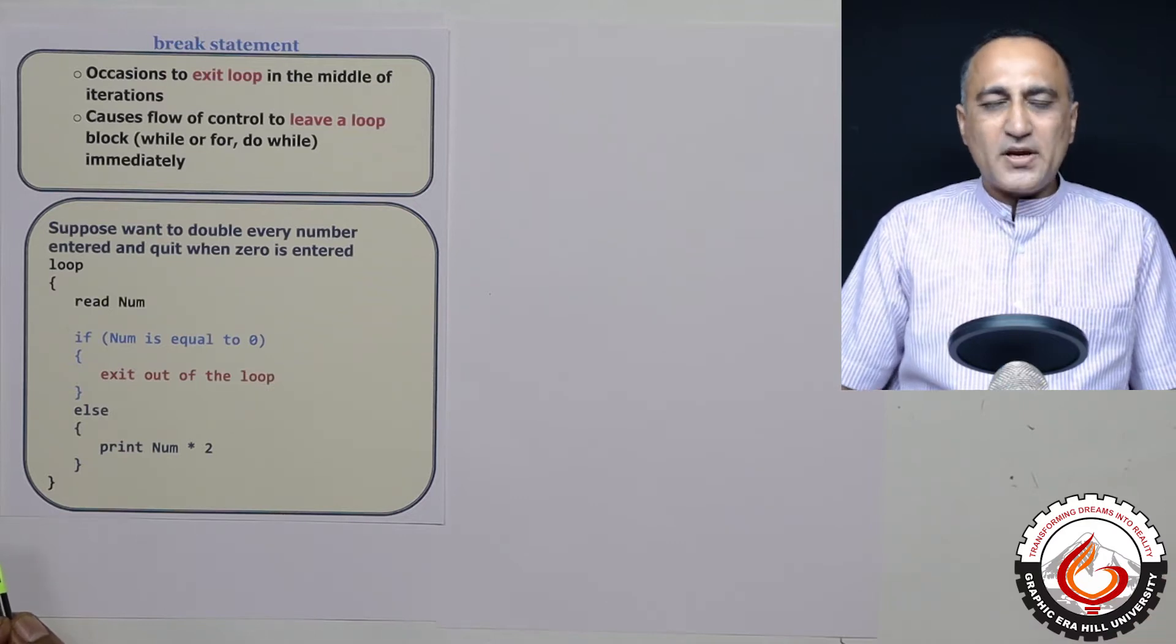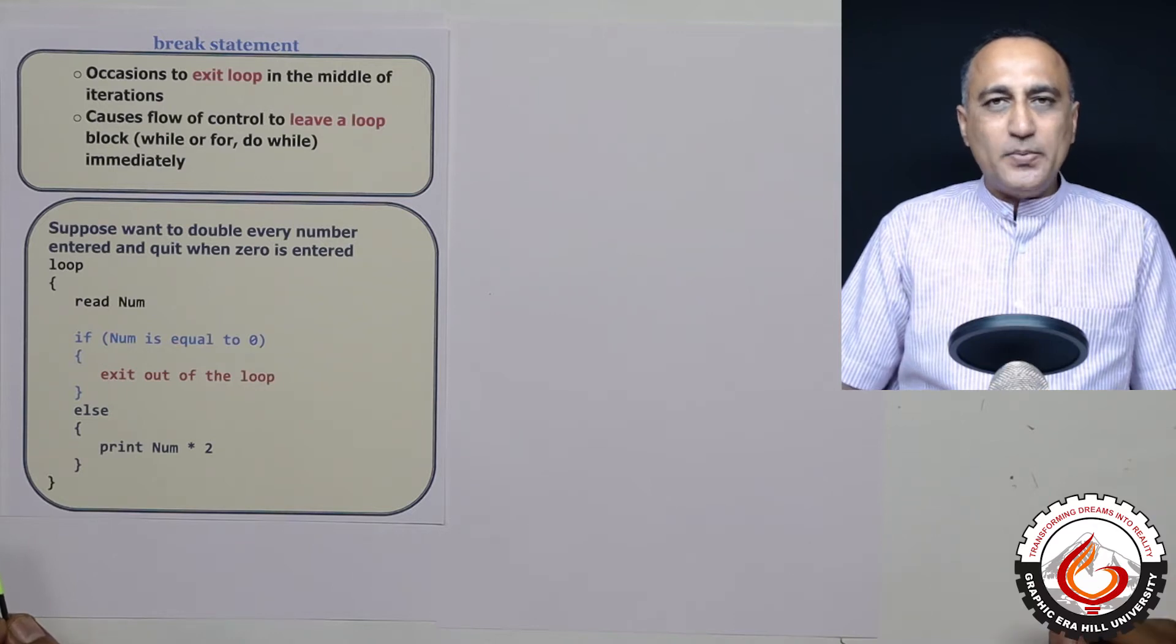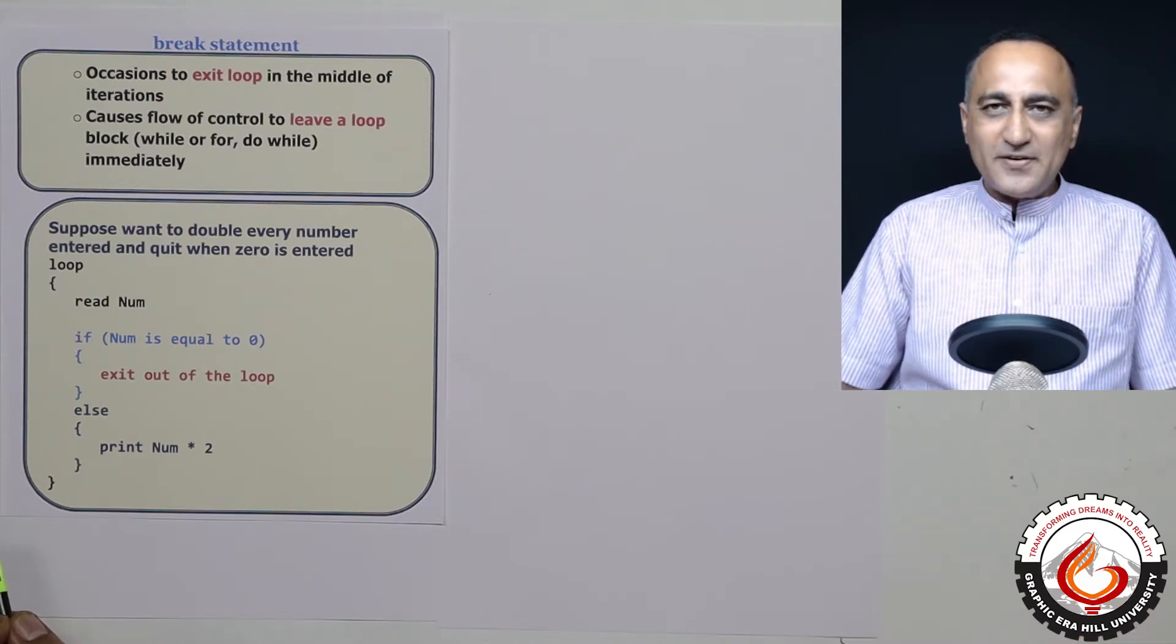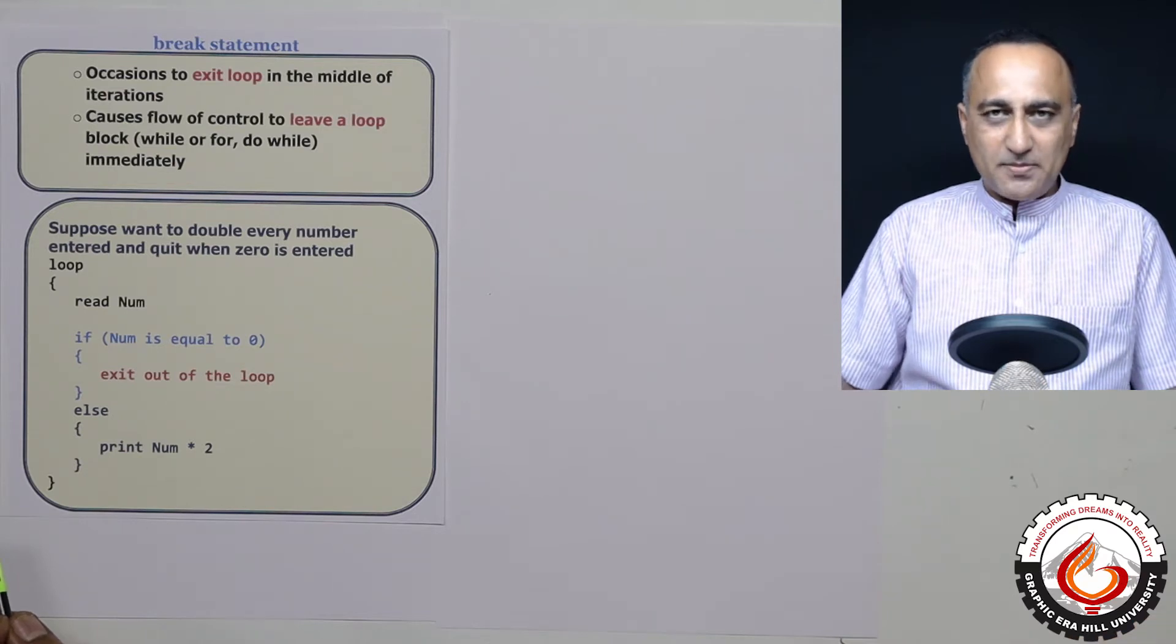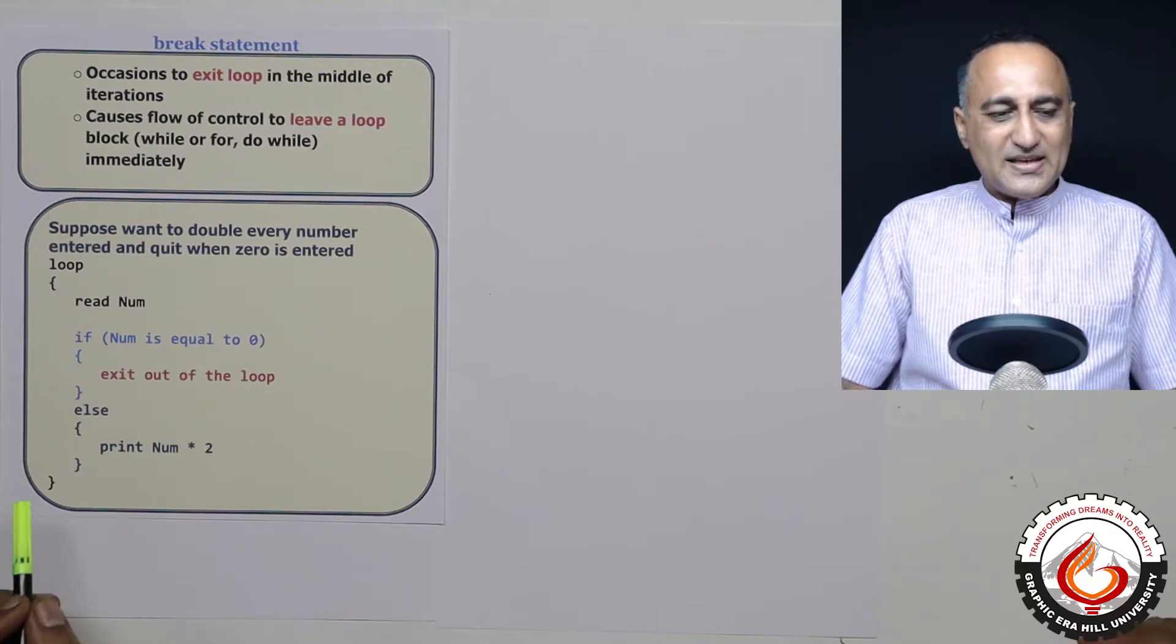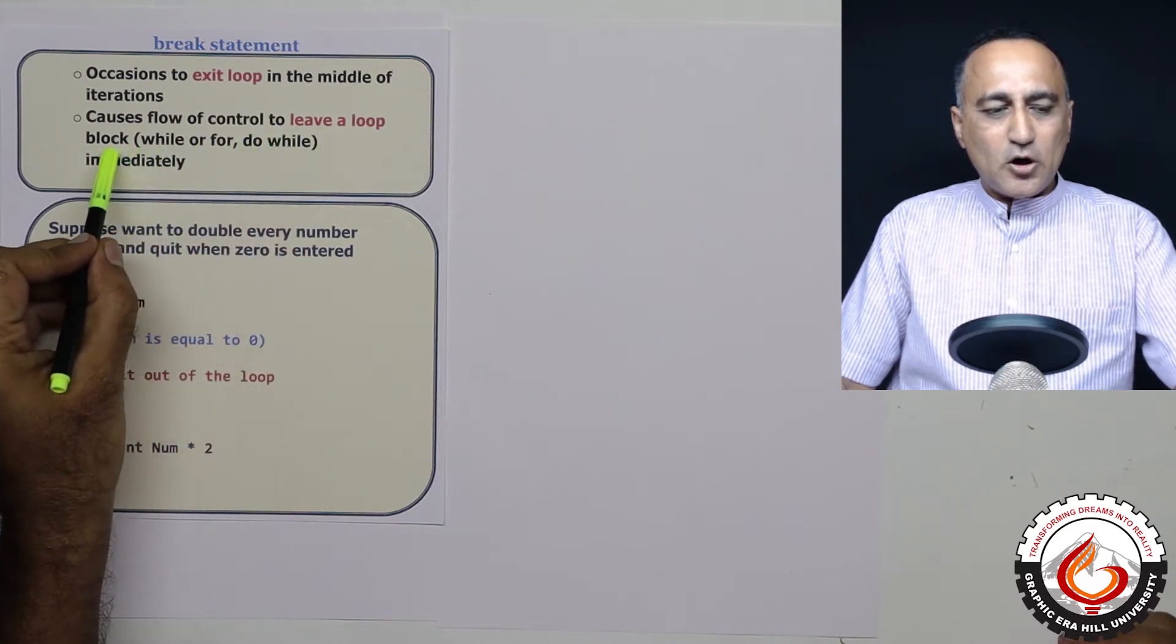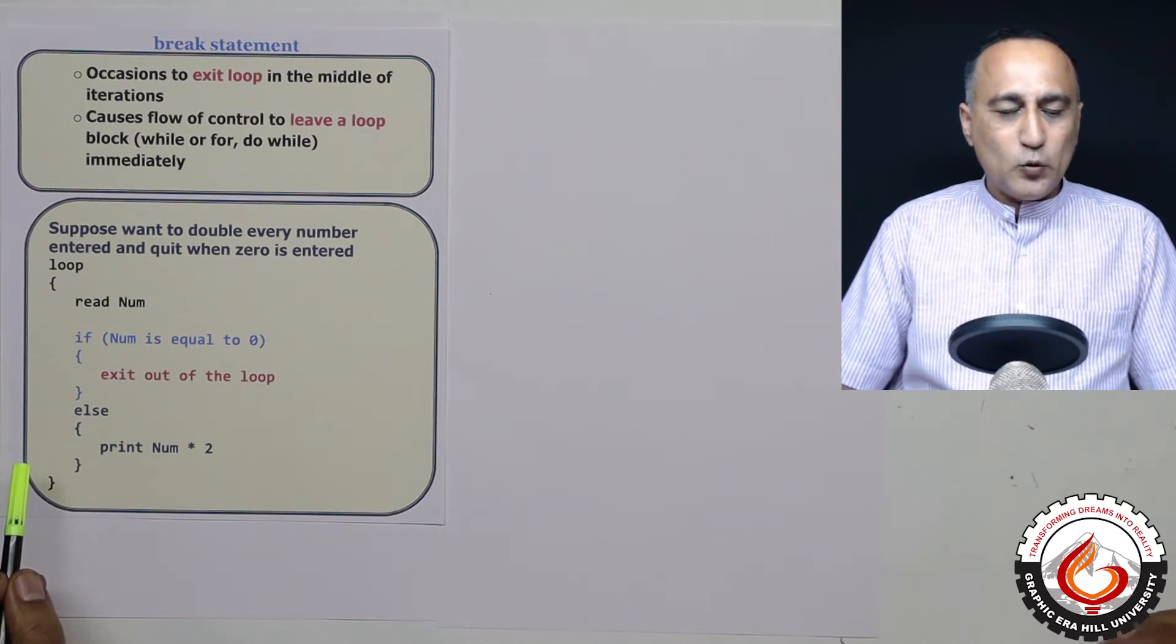There are a number of occasions when we need to come out of a loop when certain results are achieved or we need to exit the loop after a fixed number of iterations or looping statements. Now break causes the control to be transferred out of the block of instructions being executed by the while, for, or do while loop.